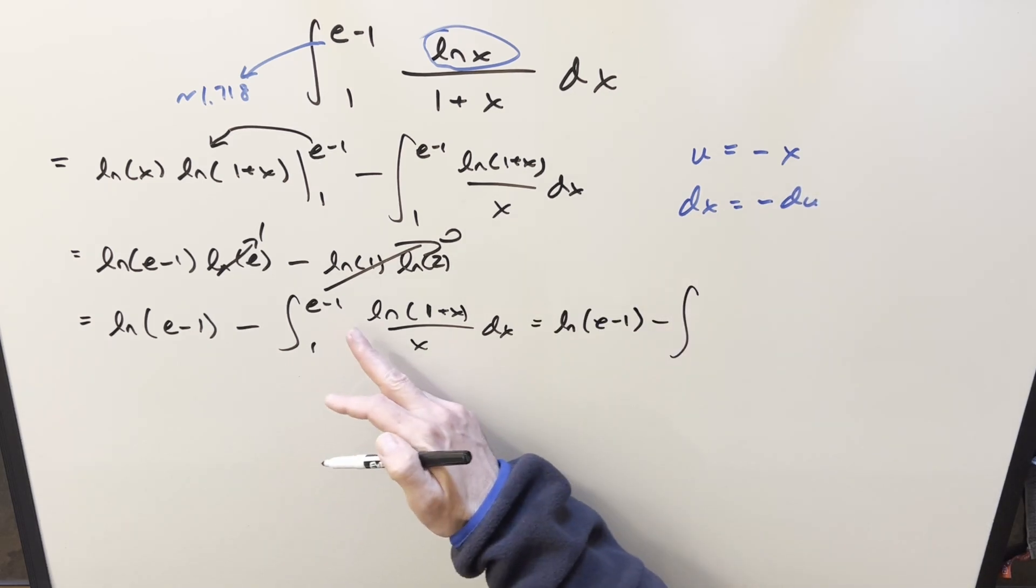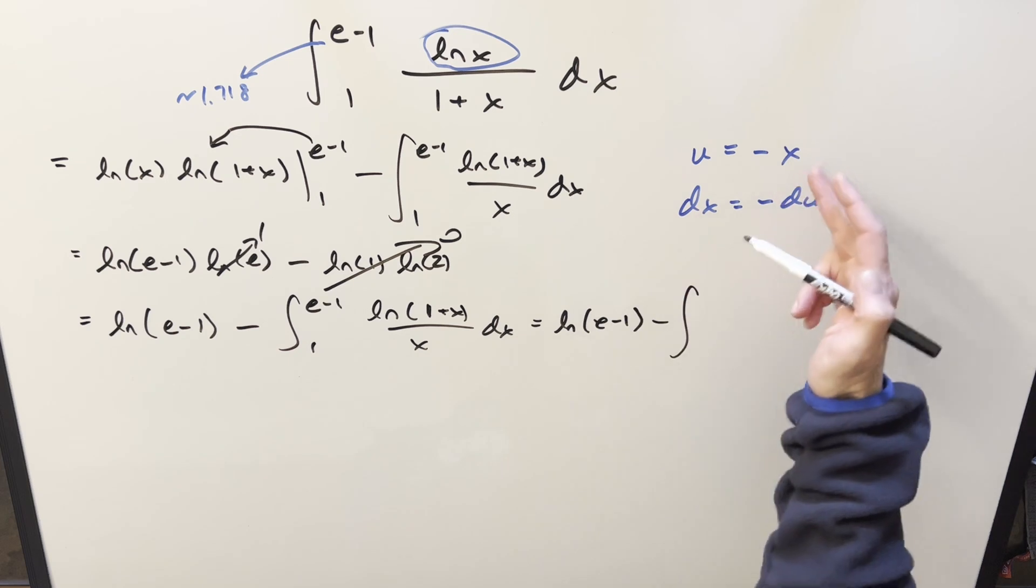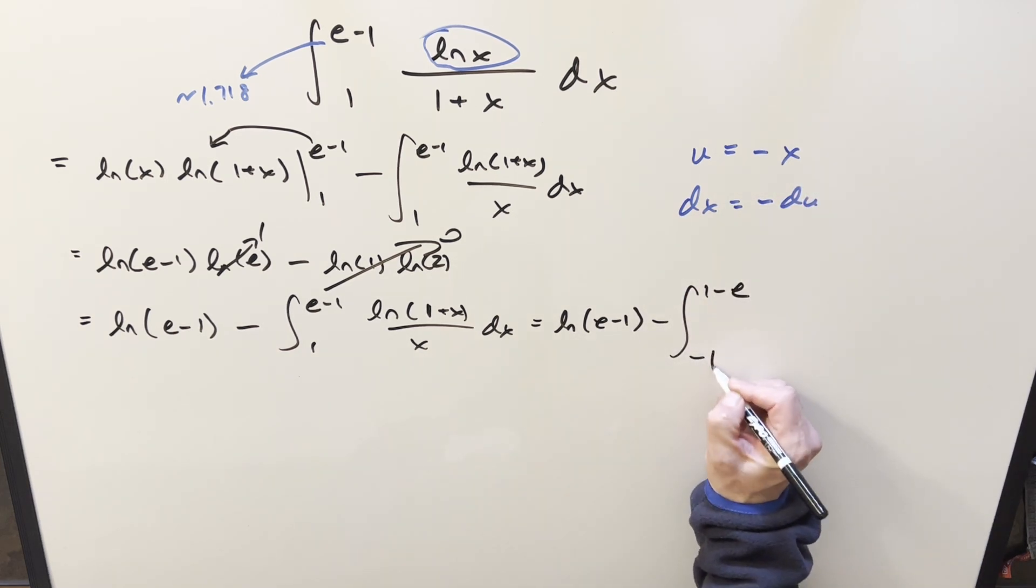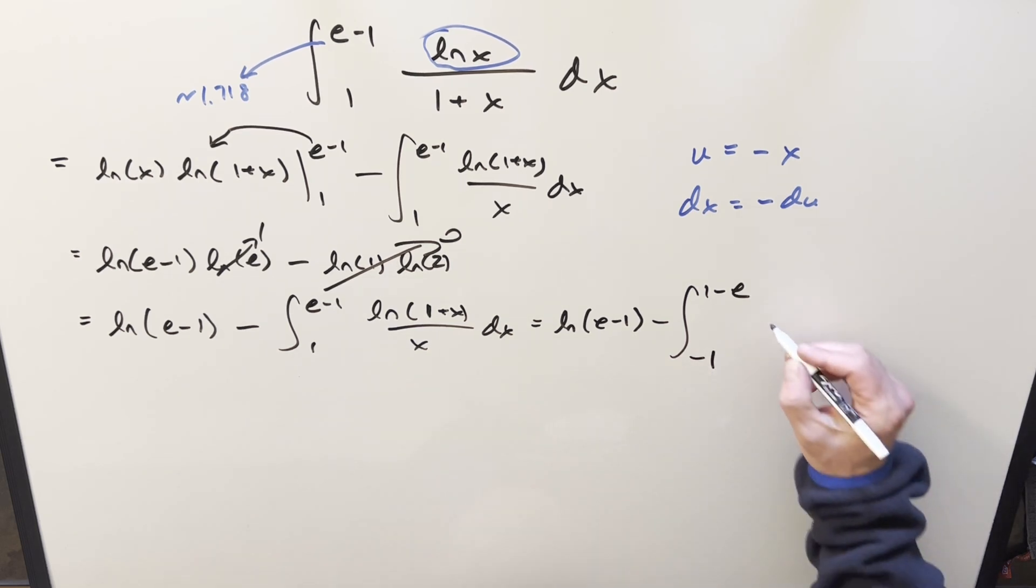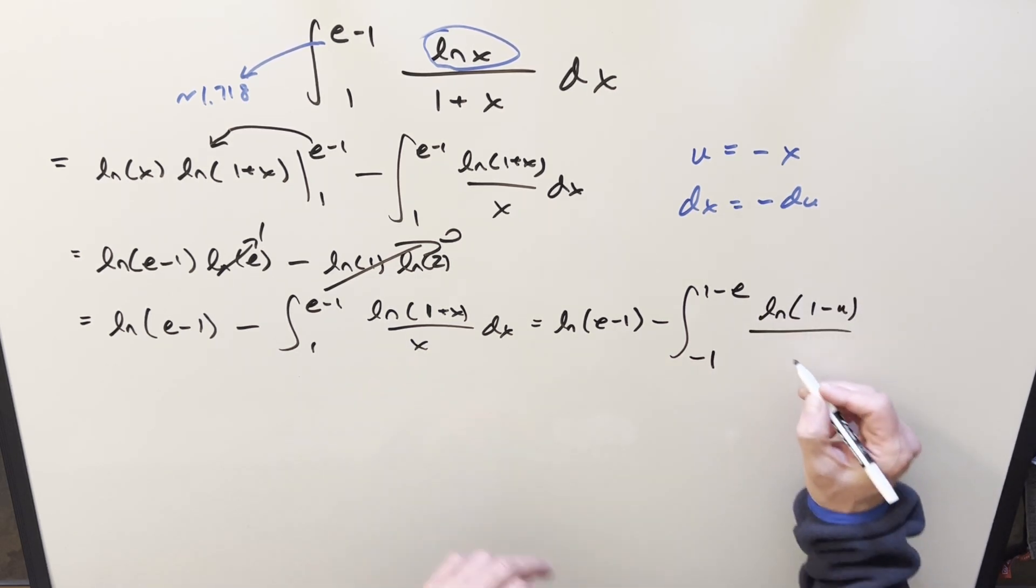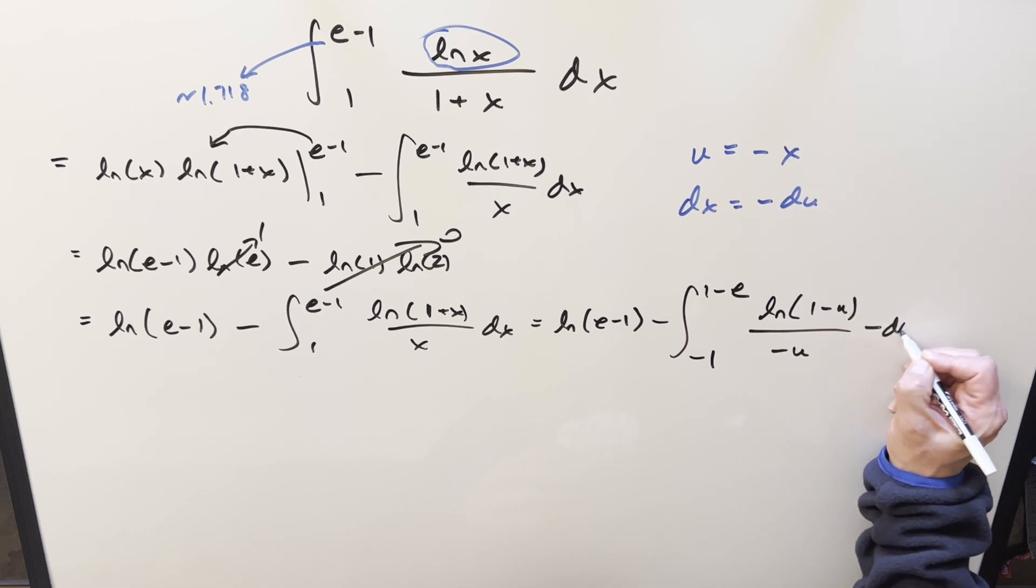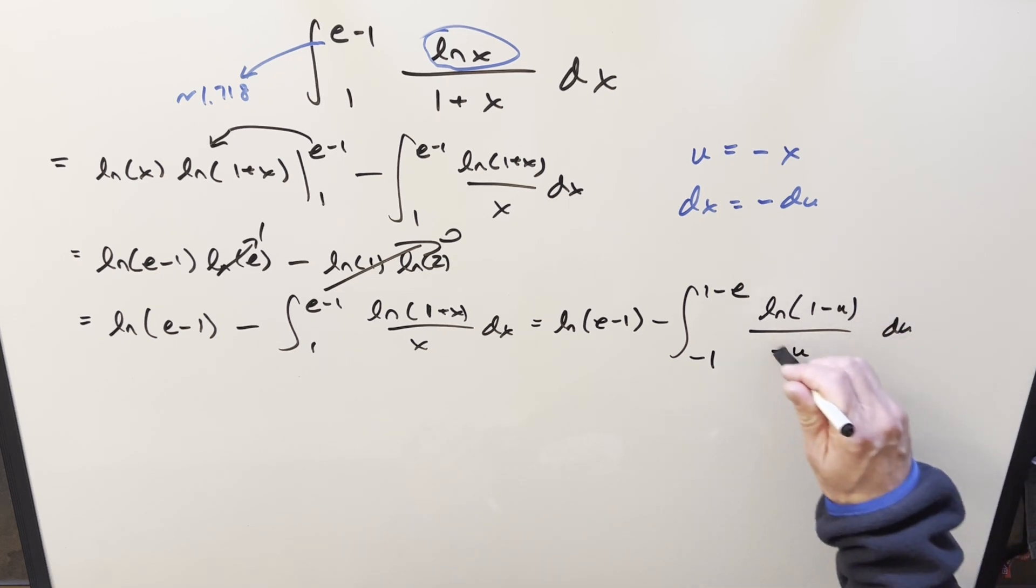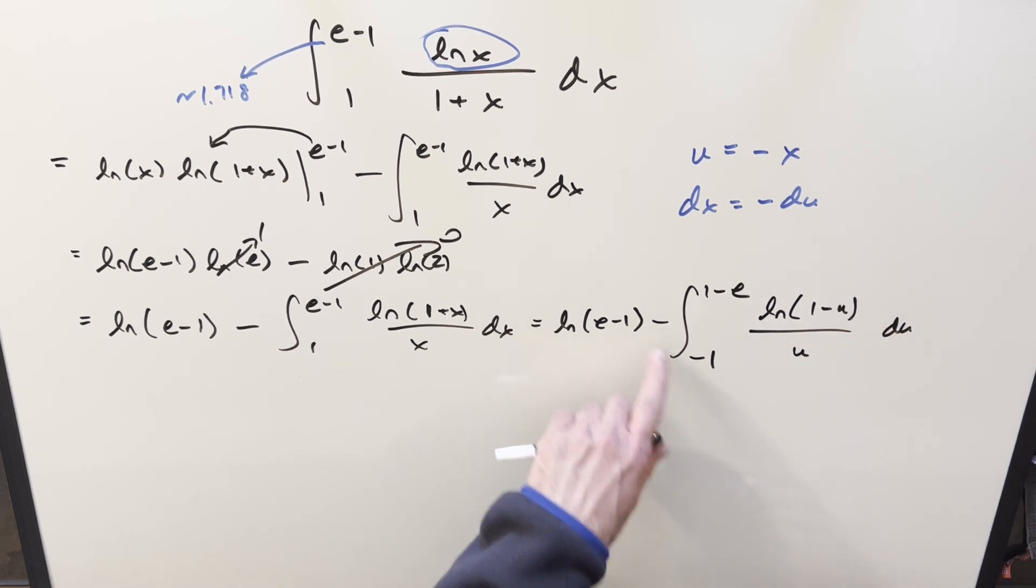Then when I do this, first updating the bounds, if we plug e minus 1 in here, it's just going to reverse it and make it 1 minus e. Plug a 1 and we get negative 1. And now the numerator is just going to become natural log 1 minus u. This thing becomes minus u minus du. And then from here, we've got a lot of minus signs. Let's take and cancel this one with this one and just make that a plus or nothing.